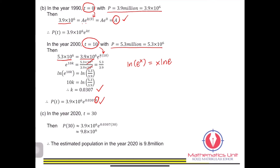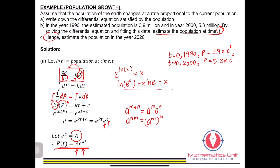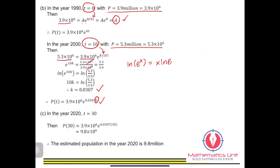The third part asks us to estimate the population in the year 2020. In 2020, t = 30, so substituting t = 30 into our equation P(t) = 3.9 × 10⁶ · e^(0.0307t), we get an estimated population of approximately 9.8 million. That is all for the exponential growth problem.